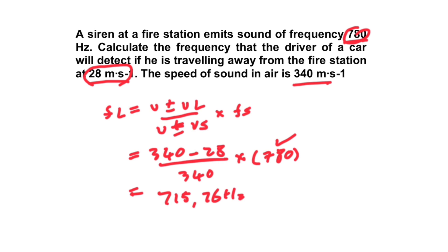The frequency observed is 715.76 Hz — less than the emitted 780 Hz, which makes sense because the listener is moving away from the sound source. In the examples we touched on, we were always calculating FL. But that's not always the case — sometimes you're given FL and FS and must find the velocity of the sound source or the velocity of the listener. Those are the types of questions you can expect in the exam, and we'll go ahead and take a look at those next.